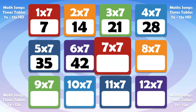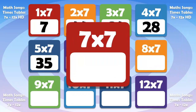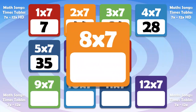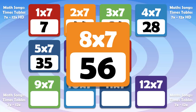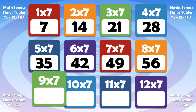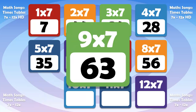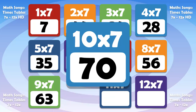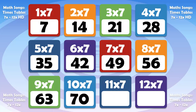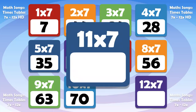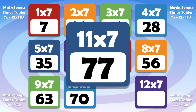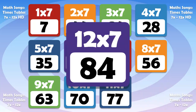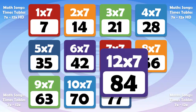7 times 7 is 49. 8 times 7 is 56. 9 times 7 is 63. 10 times 7 is 70. 11 times 7 is 77. 12 times 7 is 84.